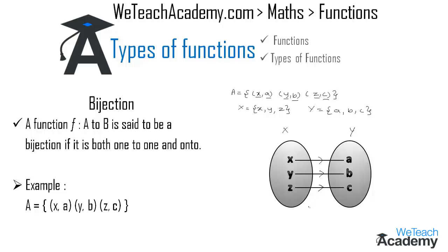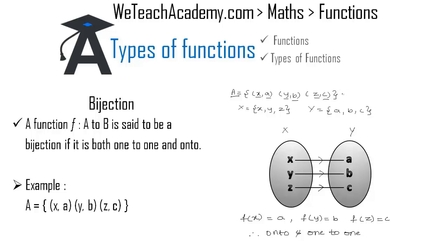As every element of X has only one image in set Y, we call this a one-to-one function. Also, all the elements of Y are mapped with elements of X, satisfying f(x) = a, f(y) = b, and f(z) = c, so we call it an onto function as well. Since the function is both one-to-one and onto, we call it a bijection.